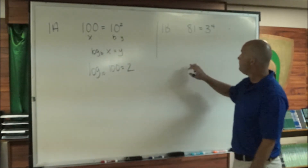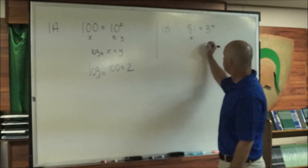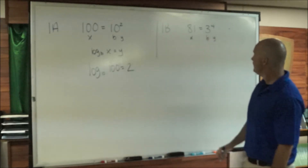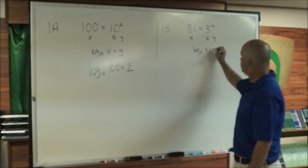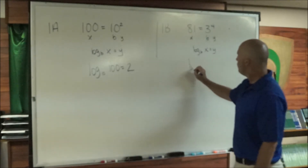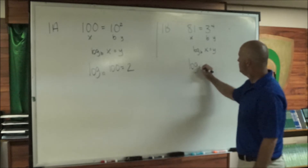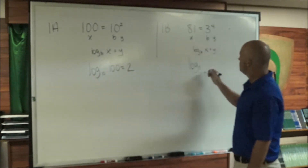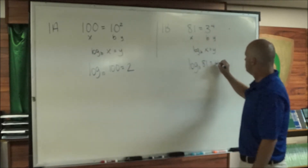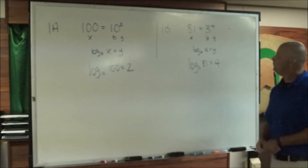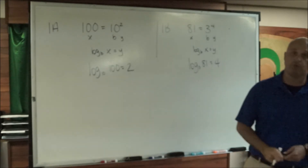Coming over here to 1b, we've got our x here, our b here, and our y here. So again we're going log base b of x equals y: log base 3 of x, which is 81, equals y, which is 4. So 81 equals 3 to the 4th is the same thing as log base 3 of 81 equals 4.